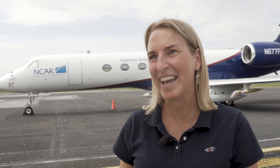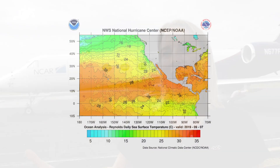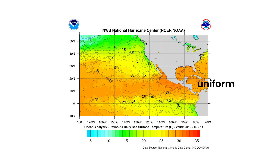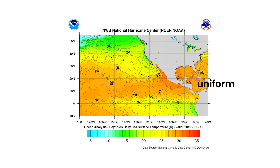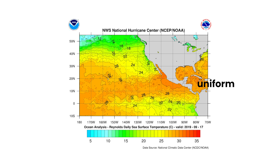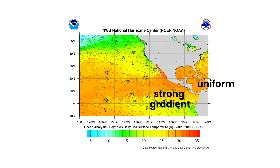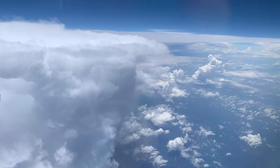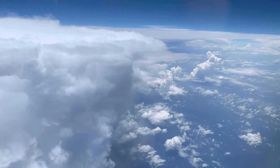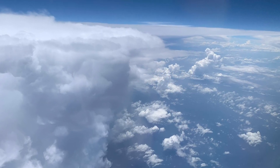We don't have data for these different atmospheres, and they are very different because the Caribbean has uniform sea surface temperature, and the Eastern Pacific has this strong gradient in sea surface temperature, which makes convection very hard to understand.